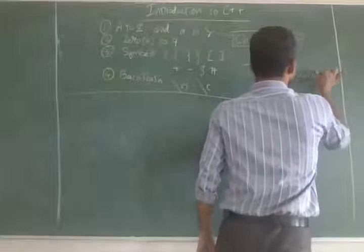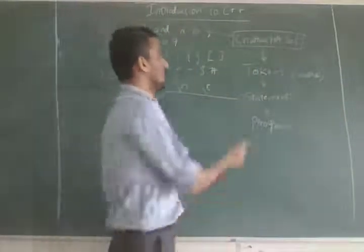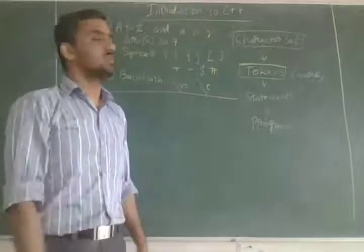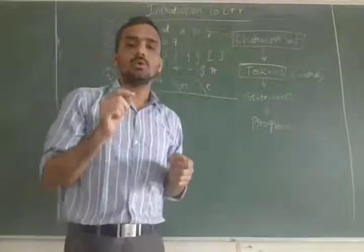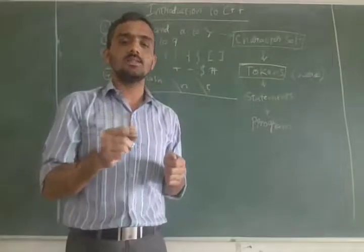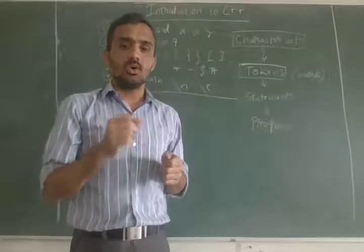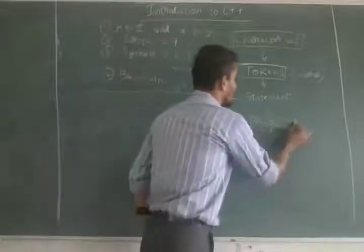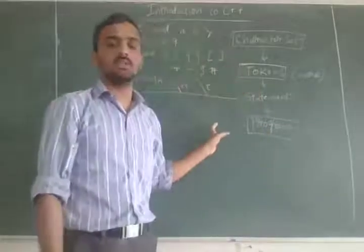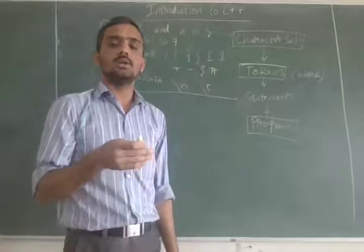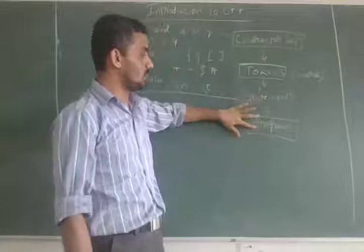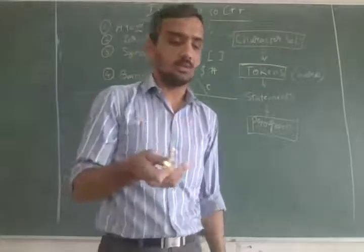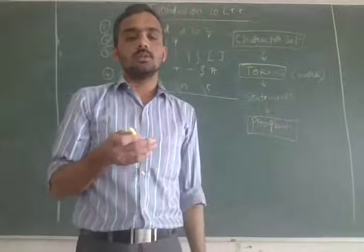In English we call them words; in programming language we call them tokens. In a paragraph, sentences are the unit of the paragraph, and words are the unit of sentences. Similarly, in a program, tokens are the smallest or individual unit of a program. So tokens compare to words in English.